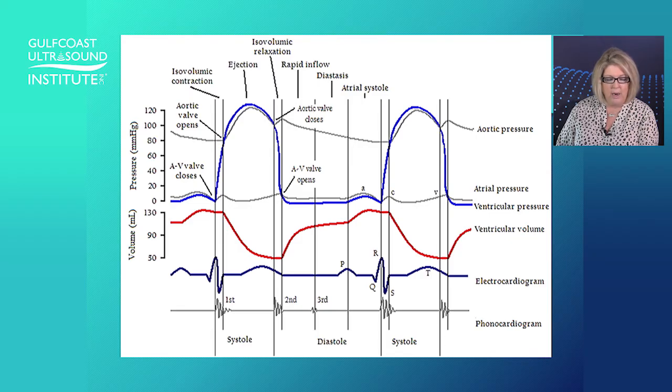So this is isovolumetric relaxation, where what we're going to see is all four valves are closed, our ventricular pressure is decreasing. And once our ventricular pressure decreases below the left atrial pressure, then our AV valves will open. And you can see here that when my aortic valve closed at this particular point, I was at my lowest volume here because I just pushed blood into the aorta.